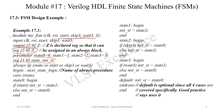The next state logic is coded using a procedural block: always at present_state, start, skip3, or wait3. If present state is state 0, depending on start we go to state 1 or remain in state 0. In state 1, without any dependency, we go to state 2. In state 2, if skip3 is high we go directly to state 0, else we go to state 3. In state 3, if wait3 is high we stay in state 3, else we go to state 0. The default is state 0 — it is optional here since all four scenarios are covered, but using a default statement is good practice.